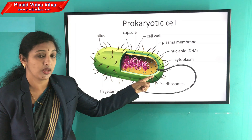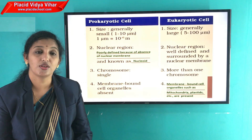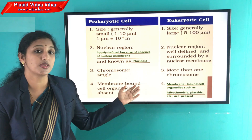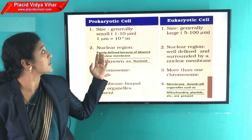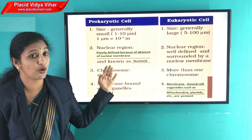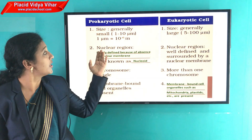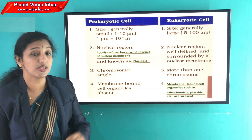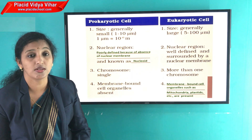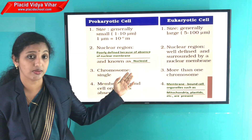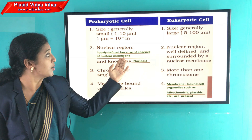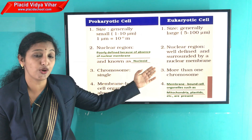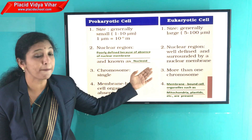In addition, bacteria have cytoplasm and ribosomes. In your textbook you can see a comparison box. The first difference is size: prokaryotic cells are small, ranging from 1 to 10 micrometers, while eukaryotic cells range from 5 to 100 micrometers. The second point is nuclear region: in prokaryotic cells it is poorly defined due to the absence of a nuclear membrane — known as nucleoid — but in eukaryotic cells there is a well-defined membrane-bound nucleus.